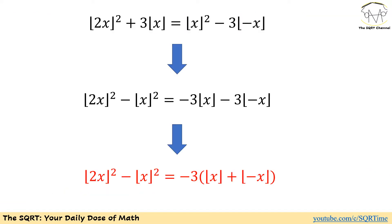To solve this problem, let's review the problem again. We have a power of 2 on both sides of this equation. The first thing I'm going to do is move the power of 2 to one side. On the left-hand side we get 2 to the power of floor of 2x minus 2 to the power of floor of x. On the right-hand side, we have 3 times floor of x and 3 times floor of negative x. Let's factor out negative 3 from the right-hand side, giving us negative 3 times the quantity floor of x plus floor of negative x.